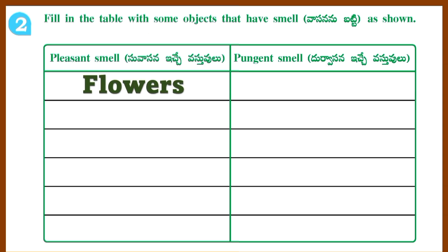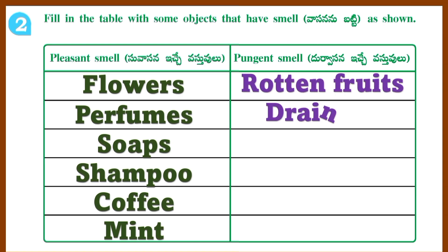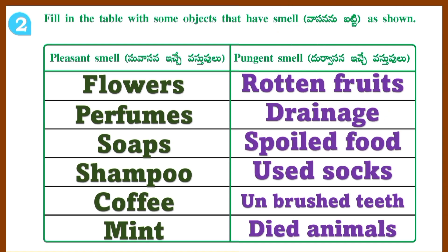Fill in the table with some objects that have a smell. Pleasant smell: Flowers, perfumes, soaps, shampoo, coffee, mint. Pungent smell: Rotten fruits, drainage, spoiled food, used socks, unbrushed teeth, dead animals.